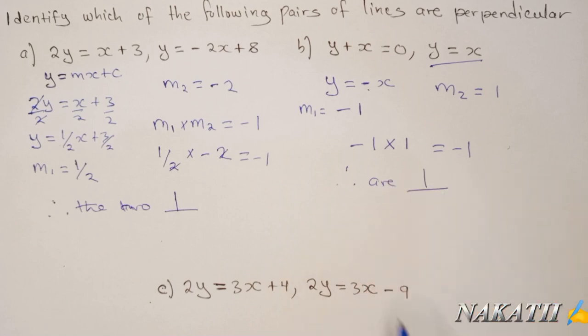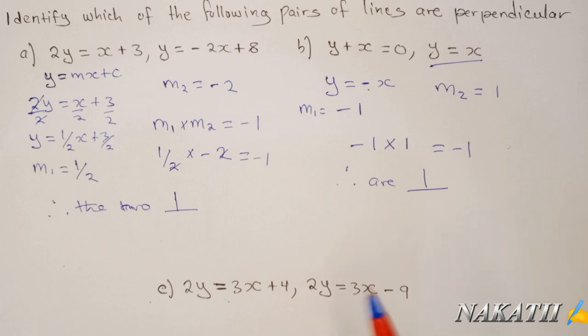Now I want you to try the third pair and see if those two lines are perpendicular. If you multiply the gradients and get negative 1, then you have shown they are perpendicular. If the product is not negative 1, then they are not perpendicular. Thank you, and let us meet in our next lesson.